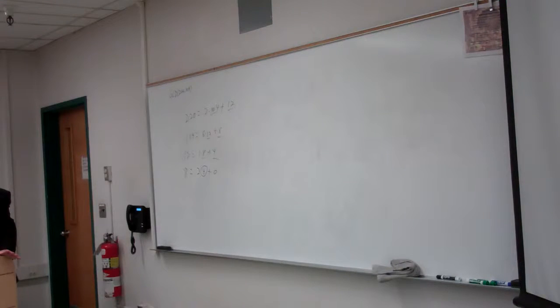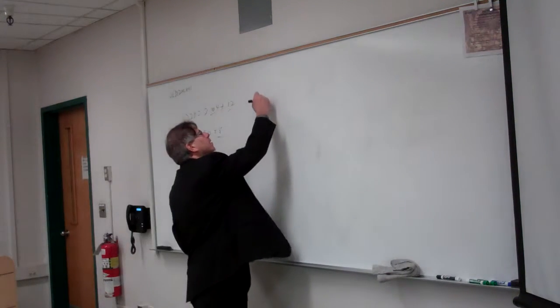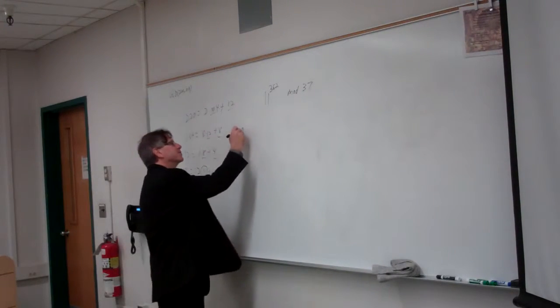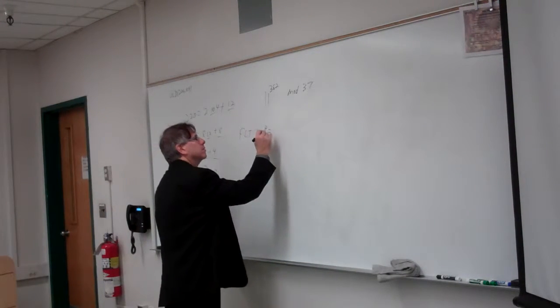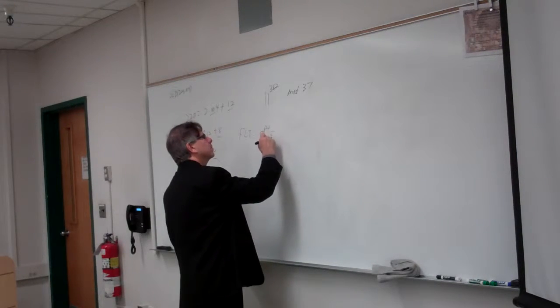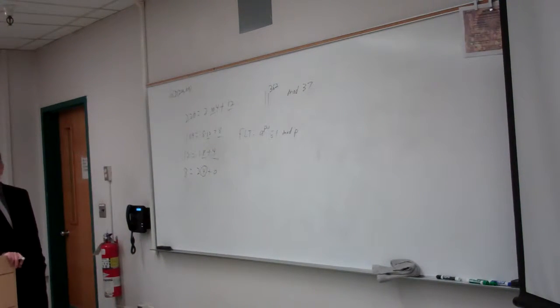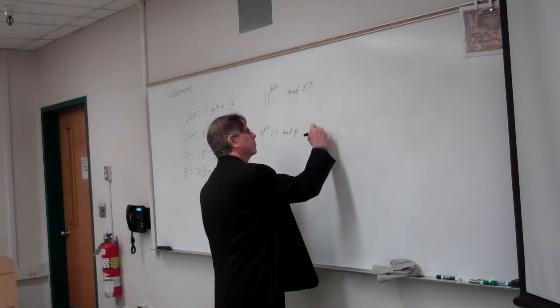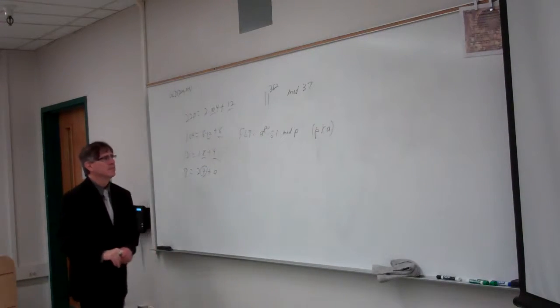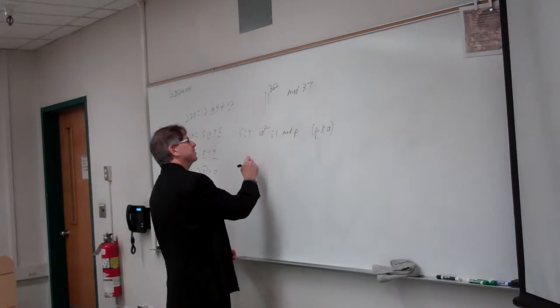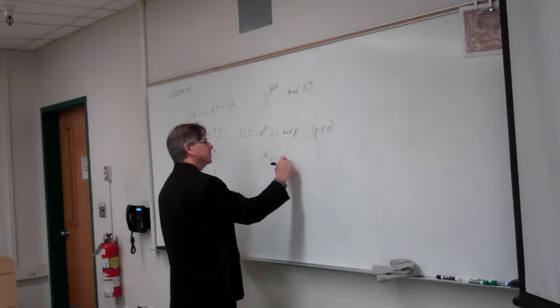A conjecture that states every even number can be written as a sum of two primes is Goldbach's conjecture. I didn't ask you to prove it. That would have been bonus points. Fermat's Little Theorem to compute this number. And remember, Fermat's Little Theorem says that any number to the p minus 1 is congruent to 1 mod p, as long as a is not divisible by p.